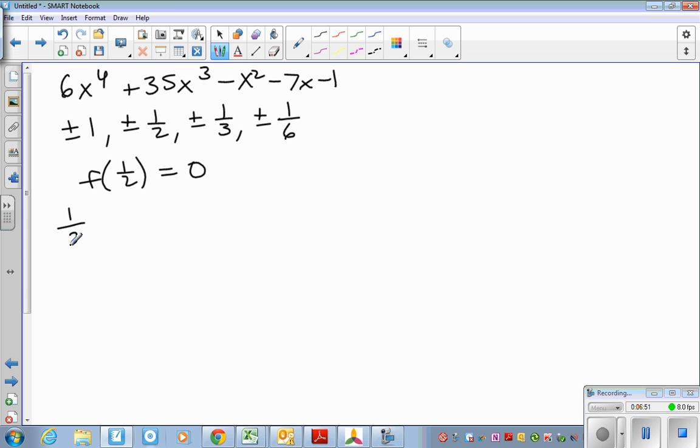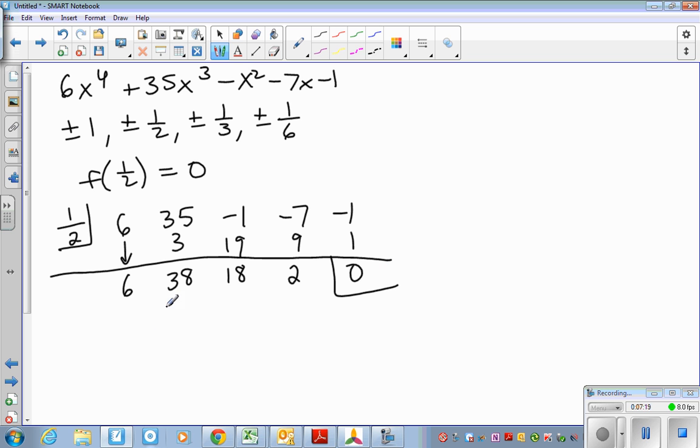Again, do synthetic division with a fraction. Carry, multiply, add. Half of 38 is 19, half of that is 9, and half of 2 is 1. So then we're left with this polynomial, which is six x cubed plus 38 plus 18 plus 2.